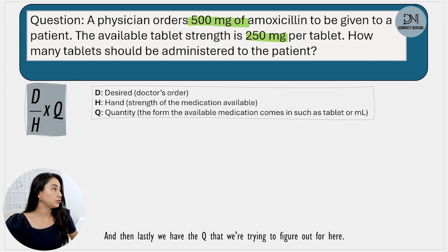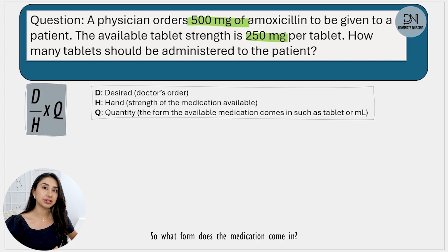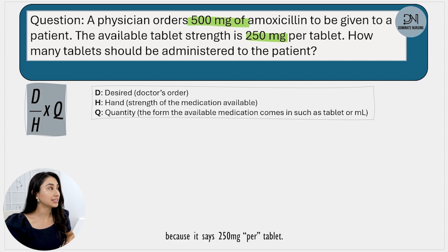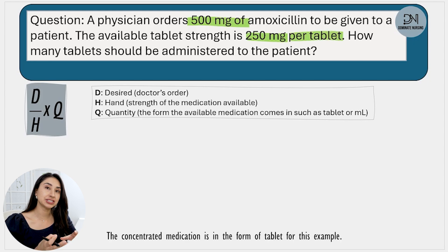And then lastly we have Q, the quantity — what form does the medication come in? Usually that will be tablets or milliliters. For this particular example the medication comes in tablet form. I know that because it says 250 milligrams per tablet, so the concentrated medication is in the form of a tablet for this example.